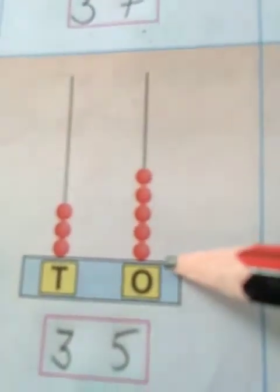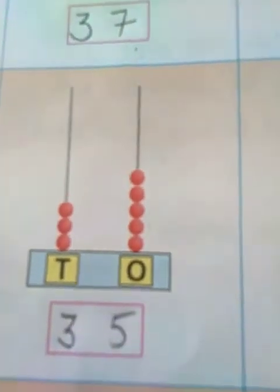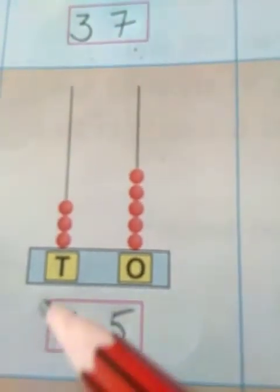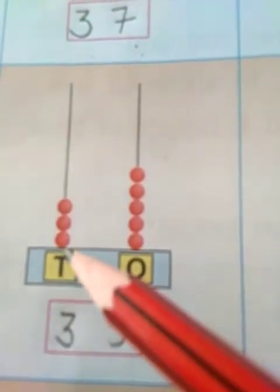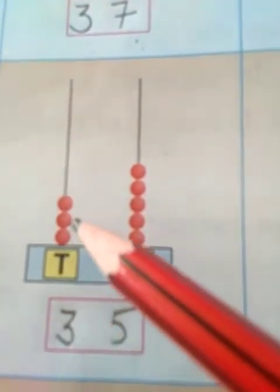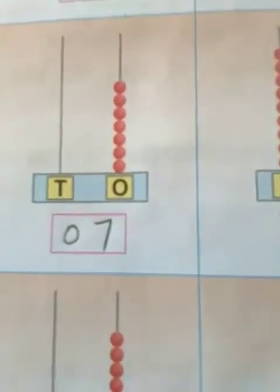Next, in the 1's place, how many beads are there? 1, 2, 3, 4, 5. We can write here 5. In the 10's place, how many numbers do we have? 1, 2, 3. So we can write here 3. So 3 and 5 — thirty-five.